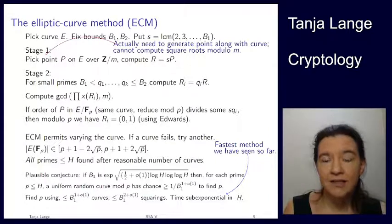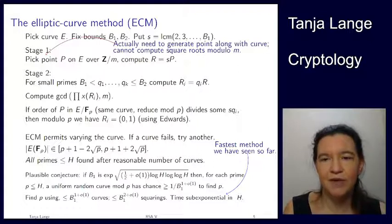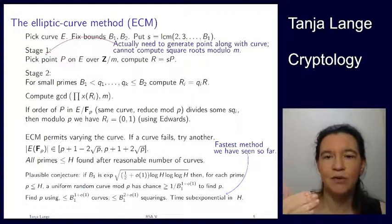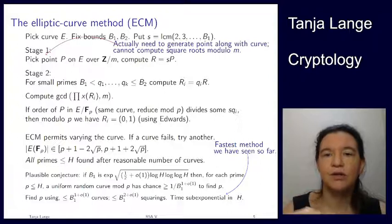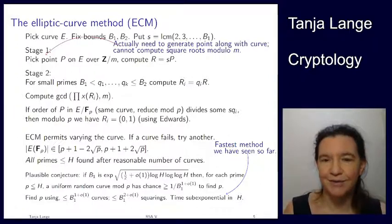In general, since we need lots of different curves, we typically just pick a point, go through the nice ones first, and then try other curves. This ends the ECM method. We have now seen all the cofactorization methods. We're going to move on to how you actually factor big numbers.